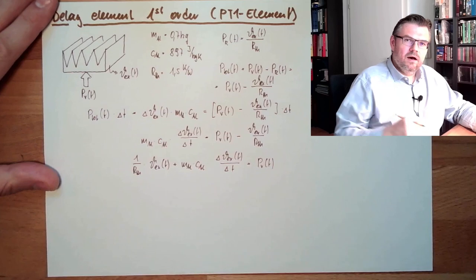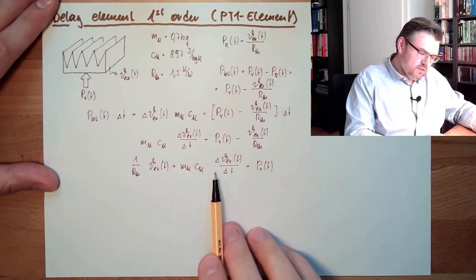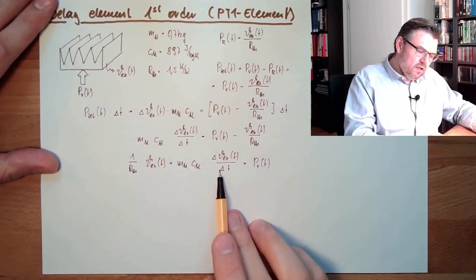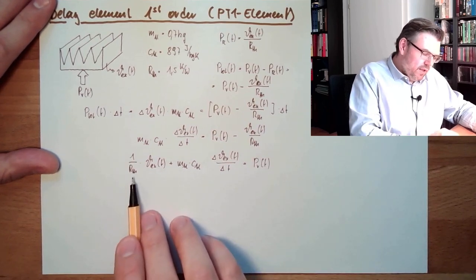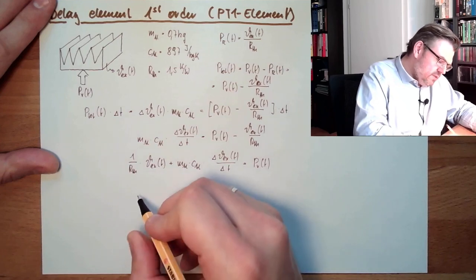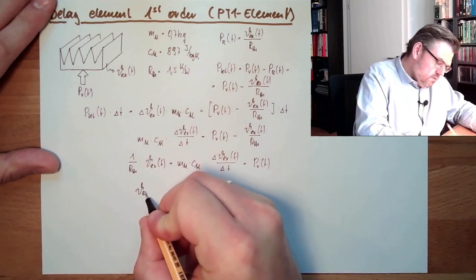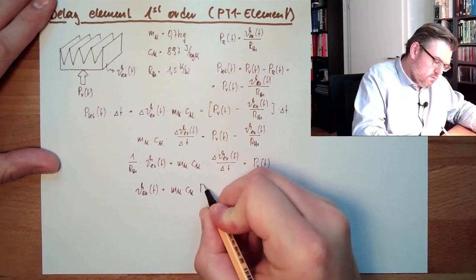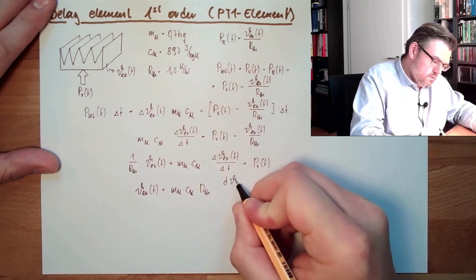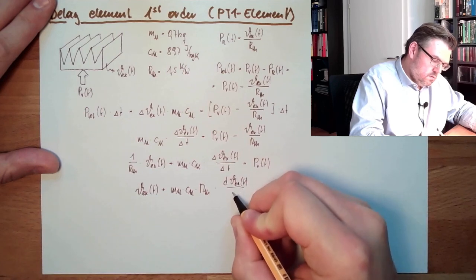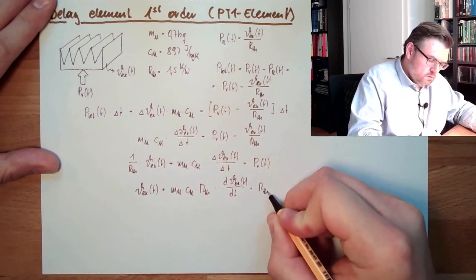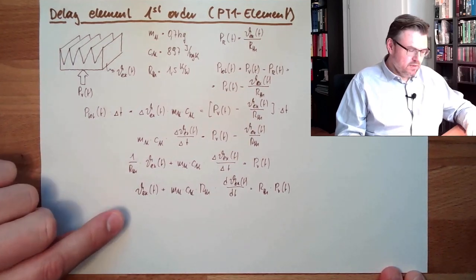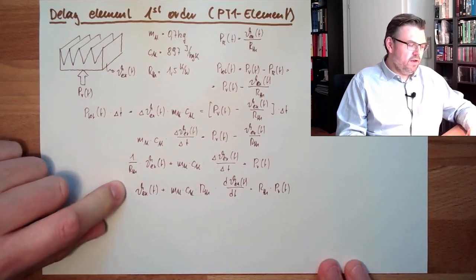Now I will make a differential equation out of this. Because delta divided by delta T, if we make this an infinitesimally small amount, becomes d/dt. Multiplying through by R_TH, we end up with a typical differential equation of a delay element first order - very typical. Let's now have a look at how a delay element first order looks as a transfer element.